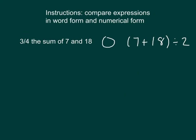The instructions here are to compare the expressions that are in word form and numerical form. On the left we have the word form, and on the right we have the numerical form. Of course, we could write out the expression and evaluate it, which we will do shortly. Another way to approach this is to go ahead and draw bar models for each.